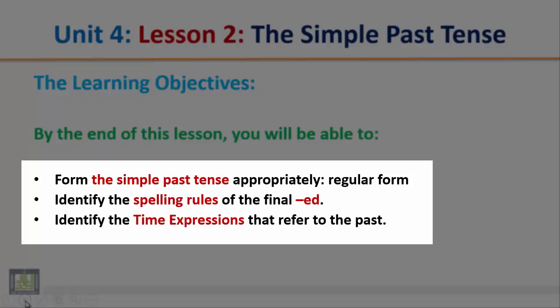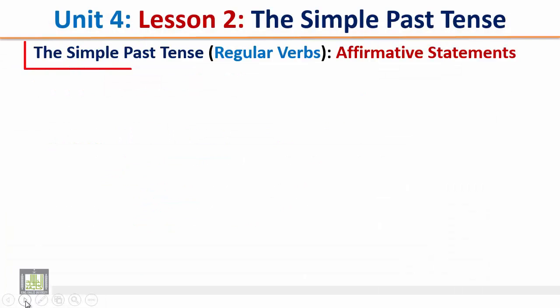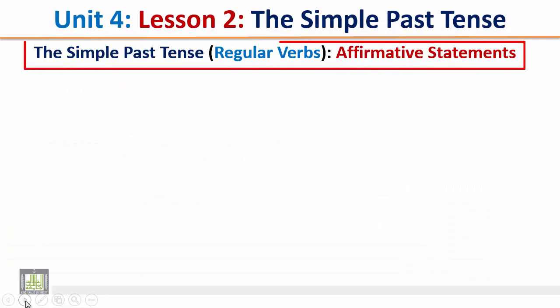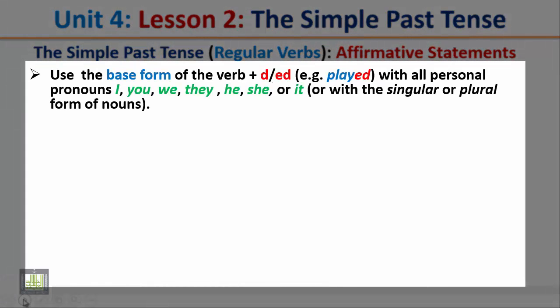You will also identify the time expressions that refer to the past. For affirmative statements in the simple past tense, use the base form of the verb plus -d or -ed with all personal pronouns — I, you, we, they, she, it — or with singular or plural nouns. The simple past tense is formed by adding -d or -ed to the base form of the verb. For example, 'play' becomes 'played.'